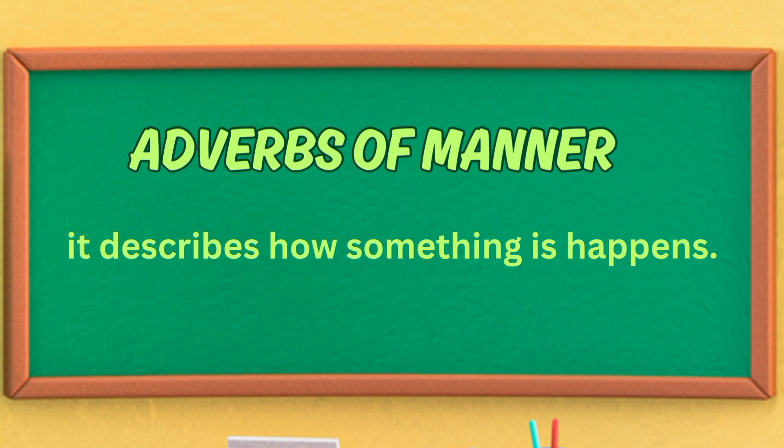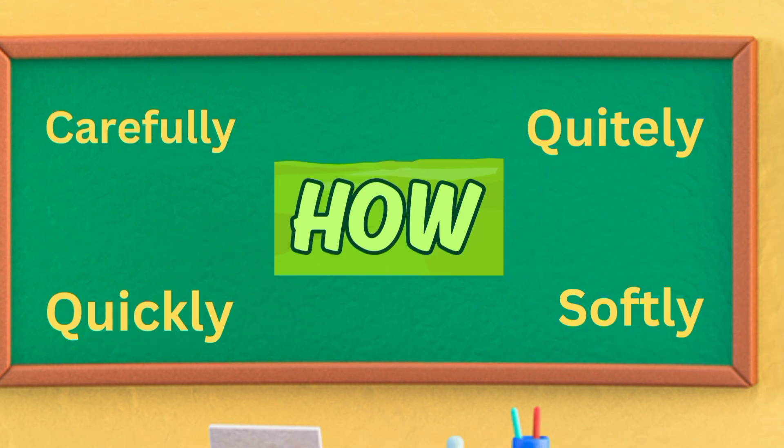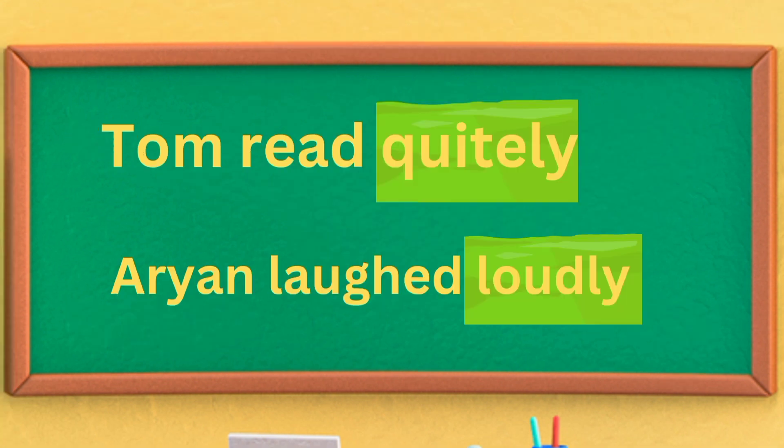Adverbs of manner describe how something happens. Examples include quietly, softly, carefully, or quickly. For example: Tom read quietly. Quietly is an adverb of manner.